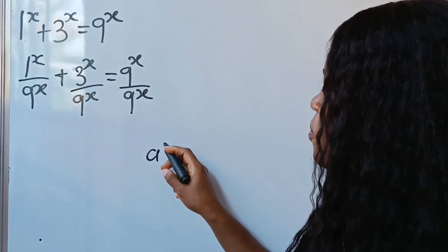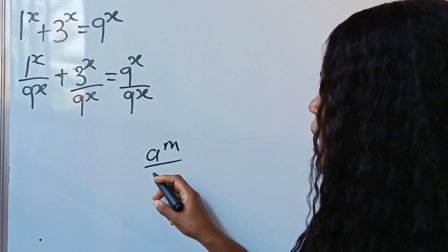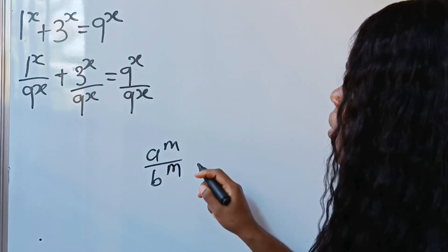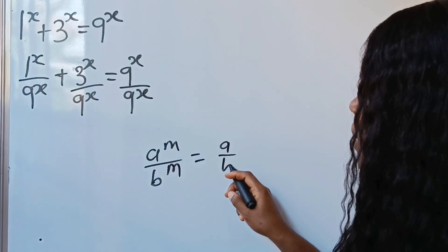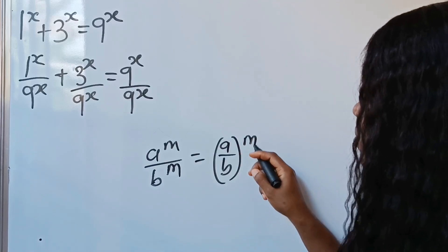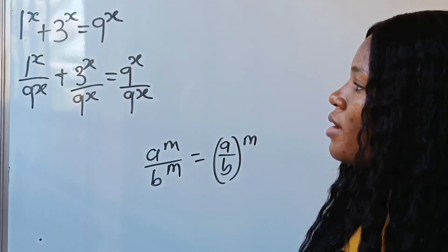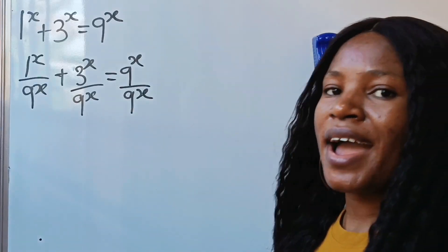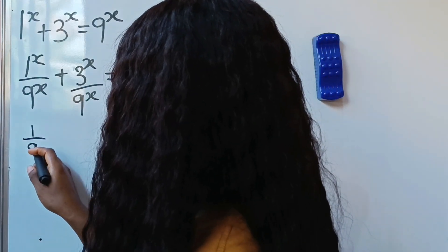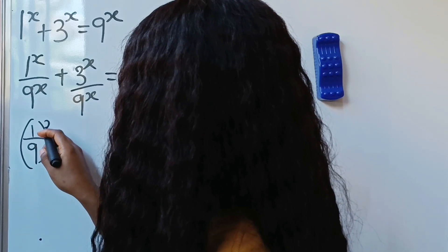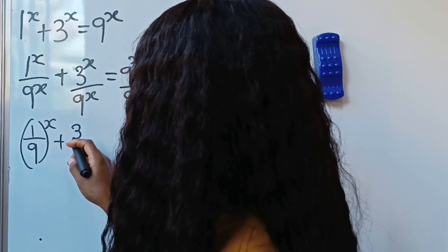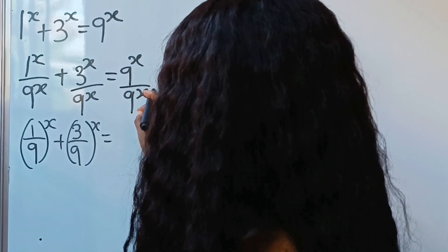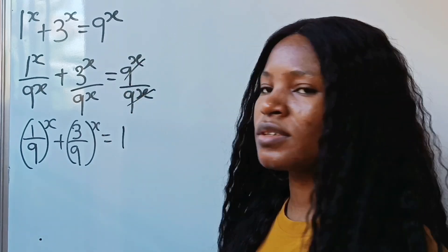Now when you have a to the power of m divided by b to the power of m, this is equal to a over b raised to the power of m, since they have the same power. So let's do the same thing here. We'll now write 1 over 9 raised to the power of x, plus 3 over 9 raised to the power of x, is equal to 1, since that term divides itself.